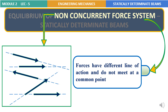Each and every force has its own line of action and they have different points of concurrency. So these two forces meet at this point and these two forces meet at a different point of concurrency. So we can say such a force system can be considered as a non-concurrent force system.